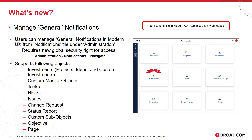What's new — Manage General Notifications. Users can manage General type notifications in Modern UX from Notification Style under Administration. We introduced a new global security right to access Notification Style under the Administration workspace, named Administration Notifications Navigate. Users should have this access right — Administration Notification Navigate — to work with notifications in Modern UX. General Notifications supports the following objects: investment type objects like projects, ideas, and custom investments; custom master objects; tasks; risks; issues; changes; status reports; custom sub-objects; objective; and page.